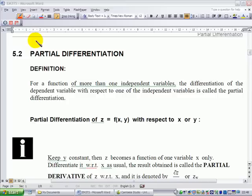We are now ready to define what is partial derivative for a function of more than one independent variable. The differentiation of the dependent variable with respect to one of the independent variables is called the partial differentiation. Partial differentiation of z, which is a function of x and y, with respect to x or y can be defined in this way.